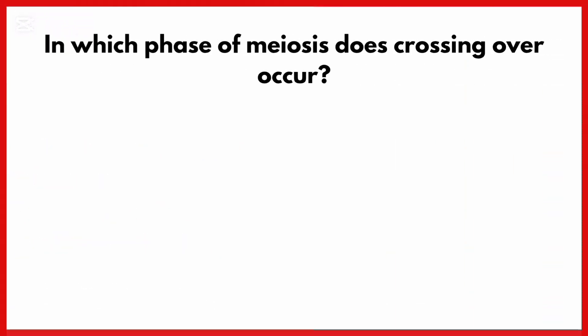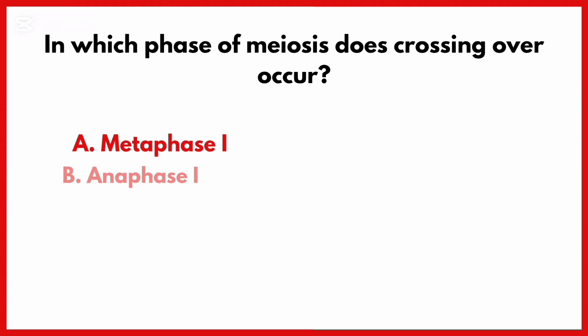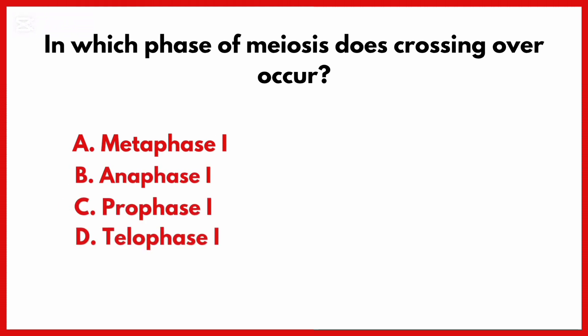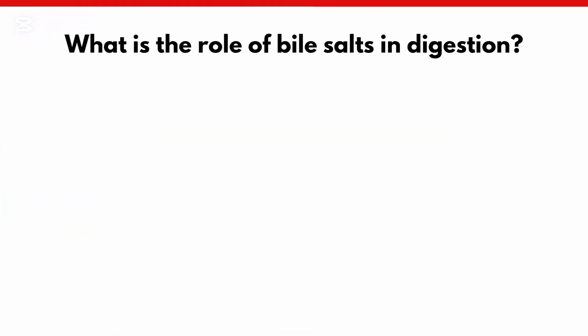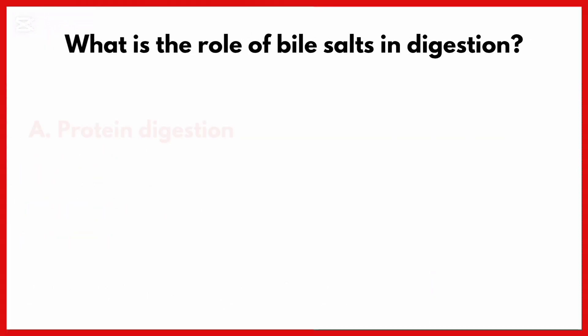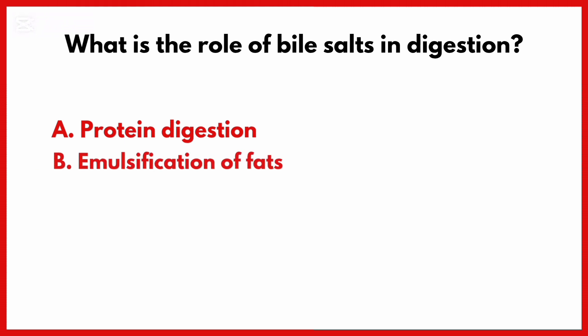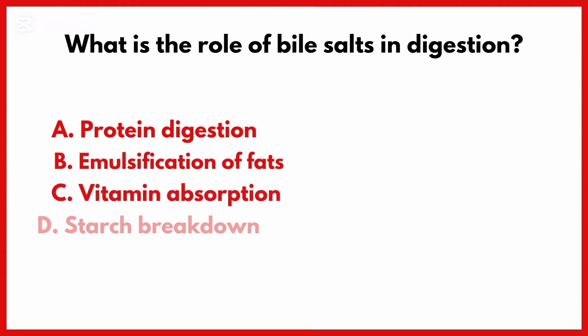In which phase of meiosis does crossing over occur? Correct answer is option C: Prophase 1.